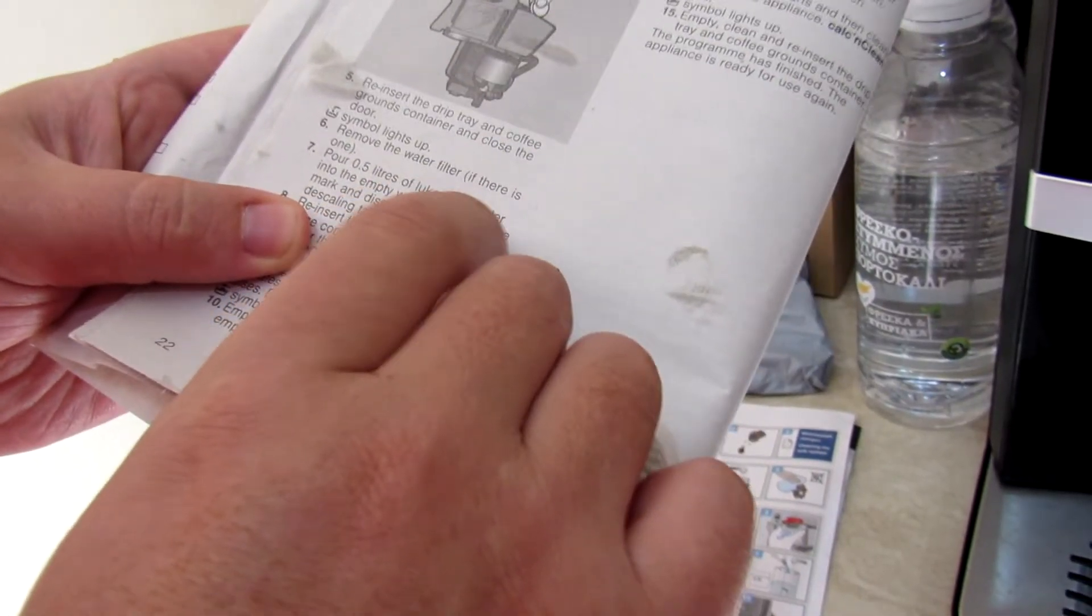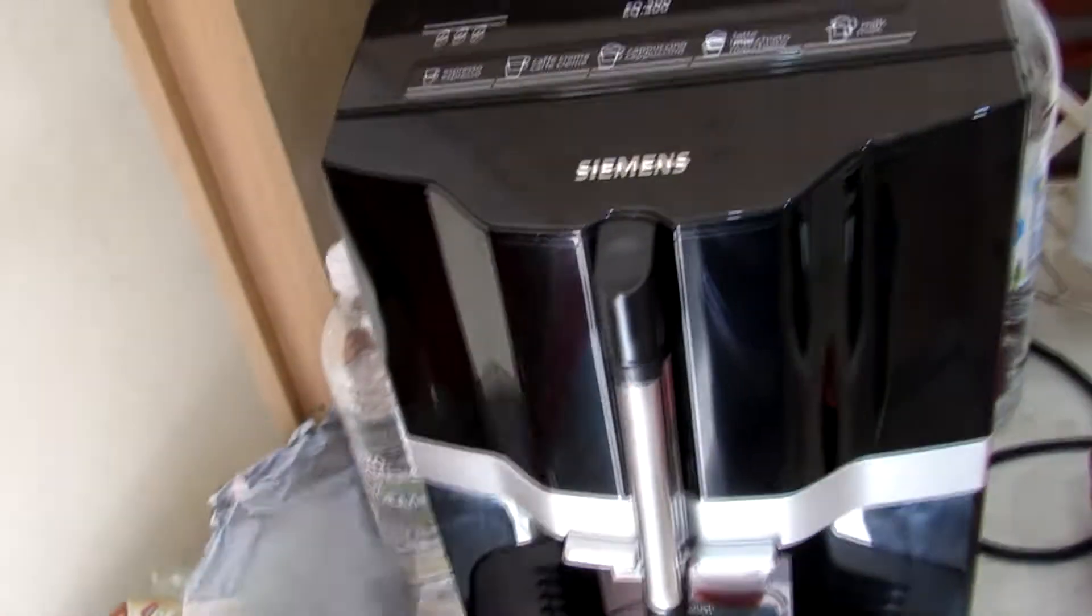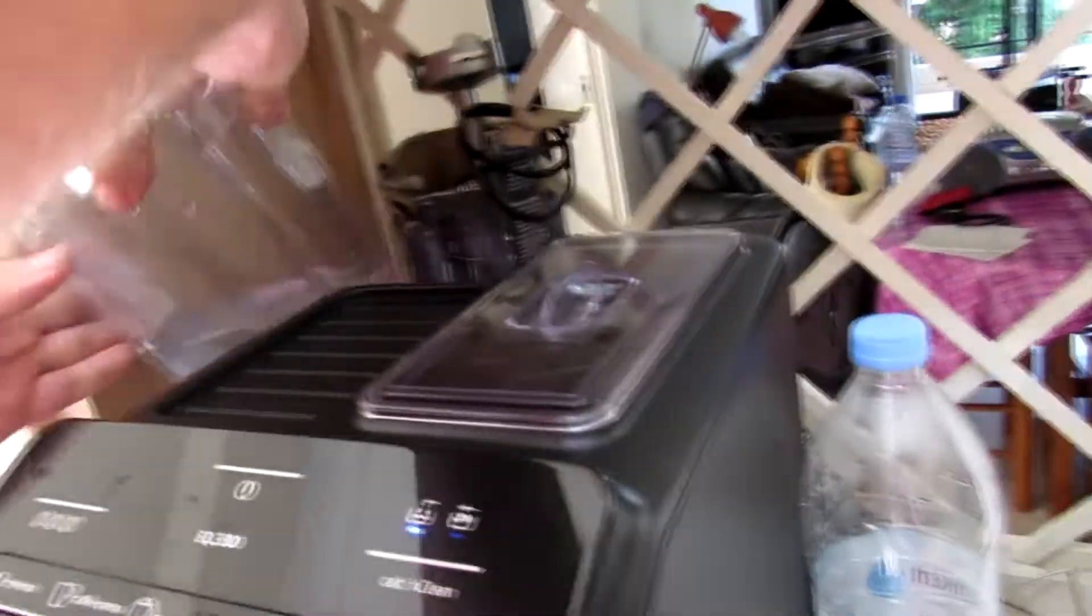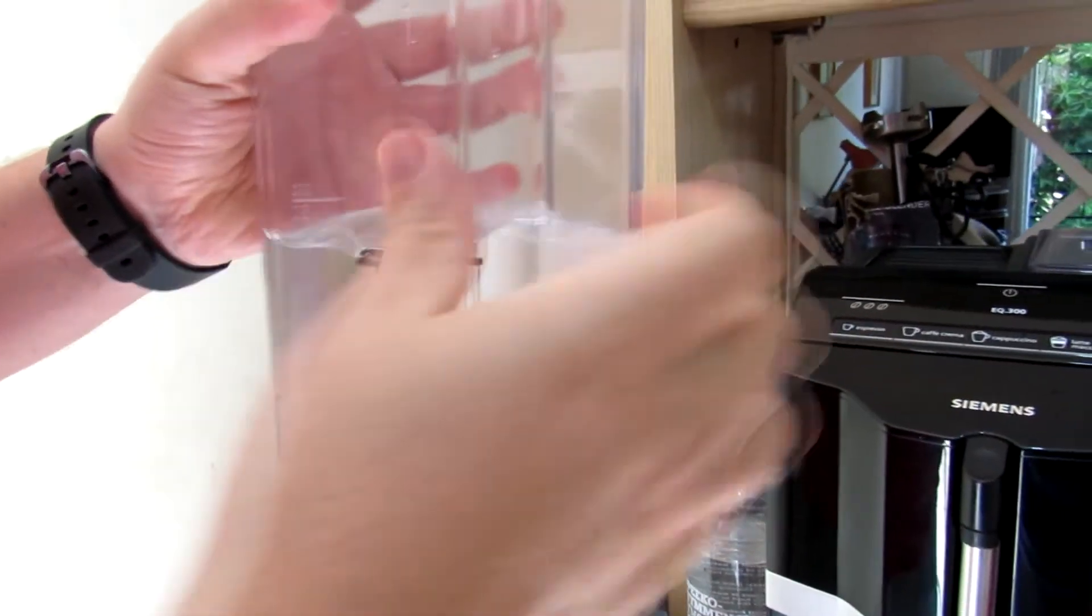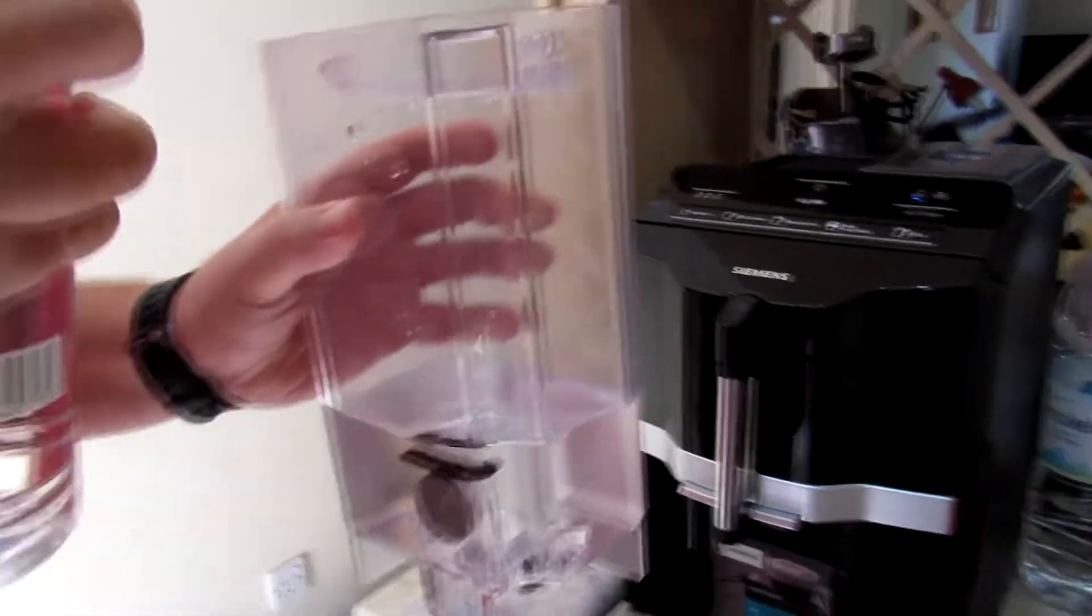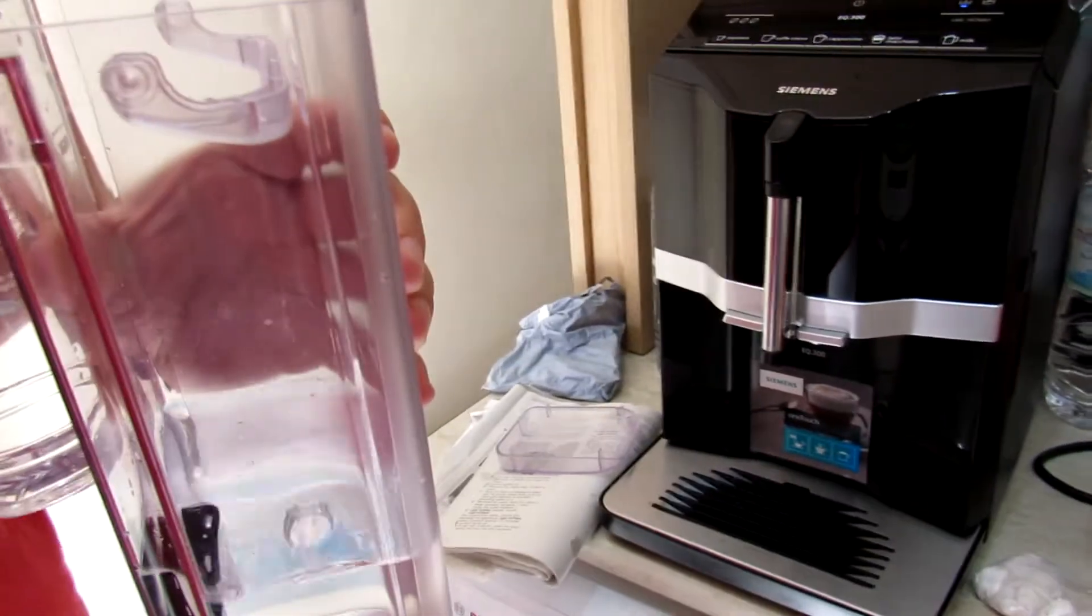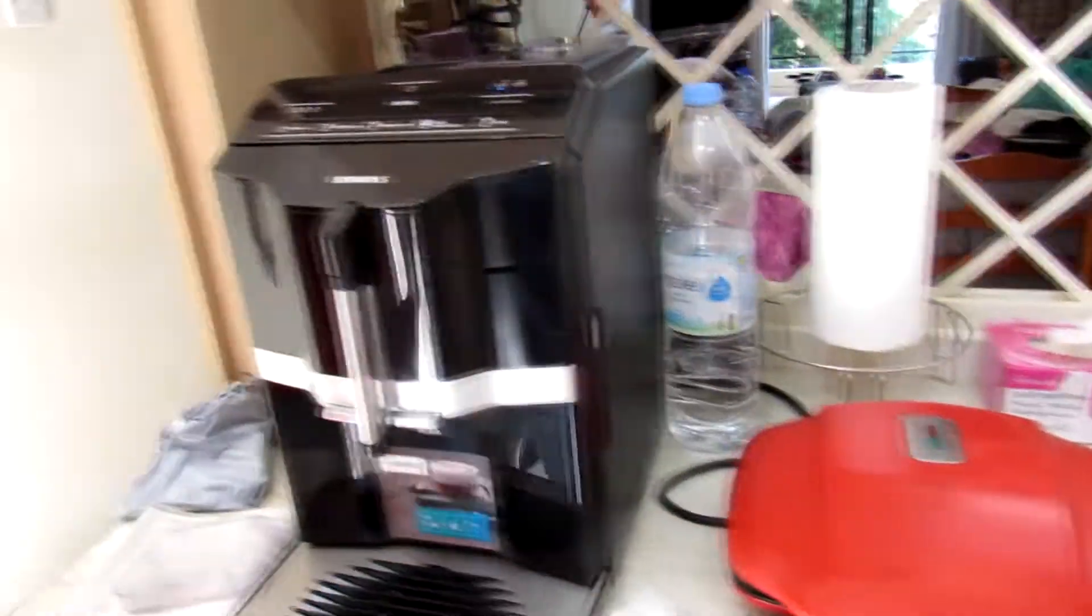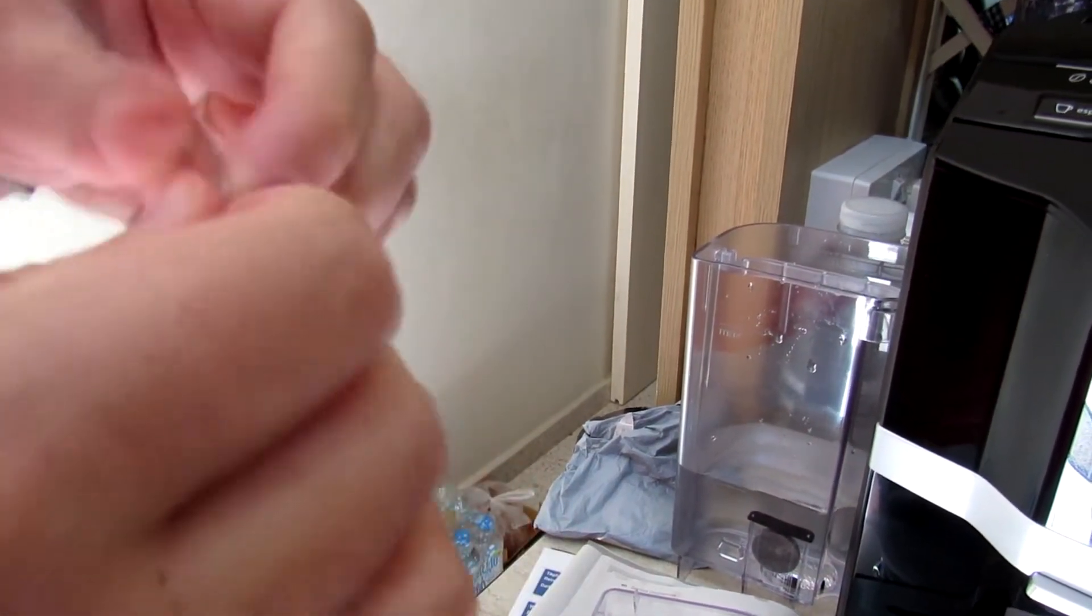Pour half liter of lukewarm water into the empty water tank up to the mark and dissolve a Siemens descaling tablet in it. The water is warm, lukewarm. We need half liter of water here. We have some filtered water here.